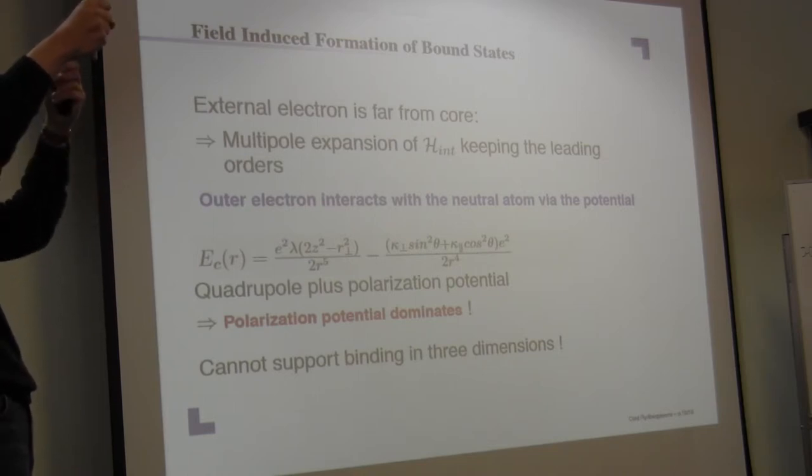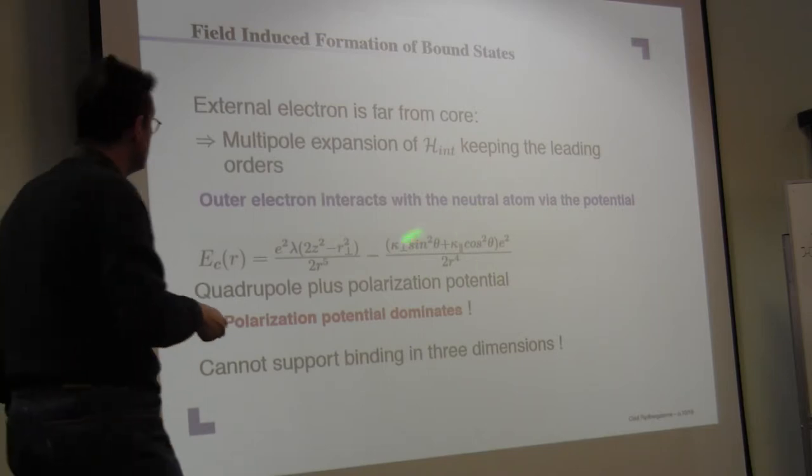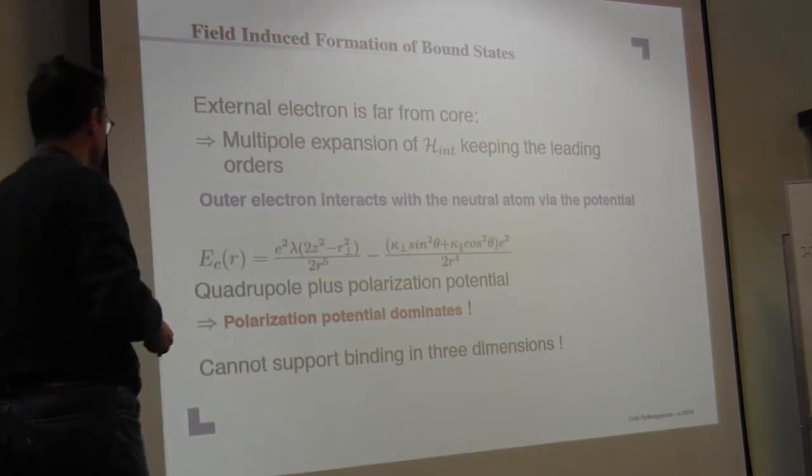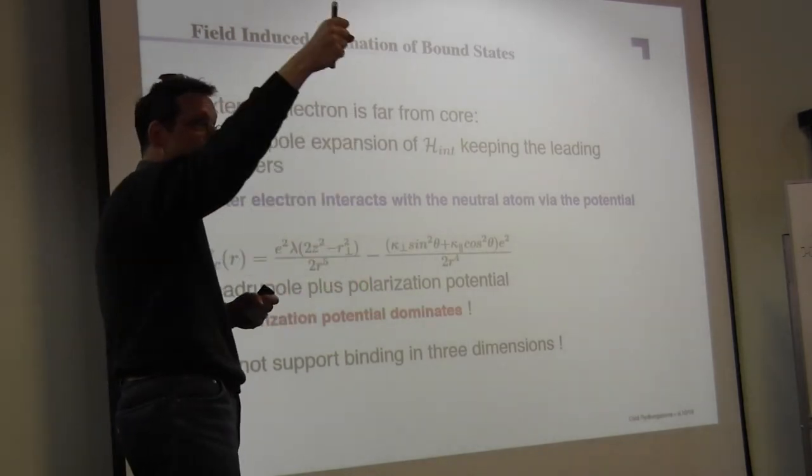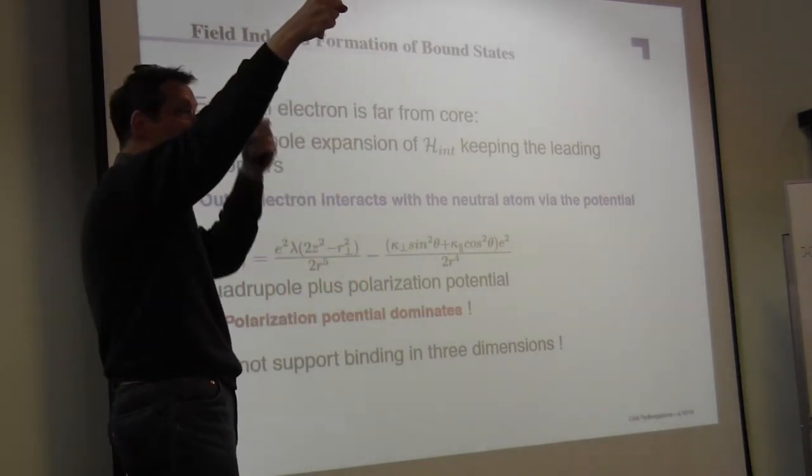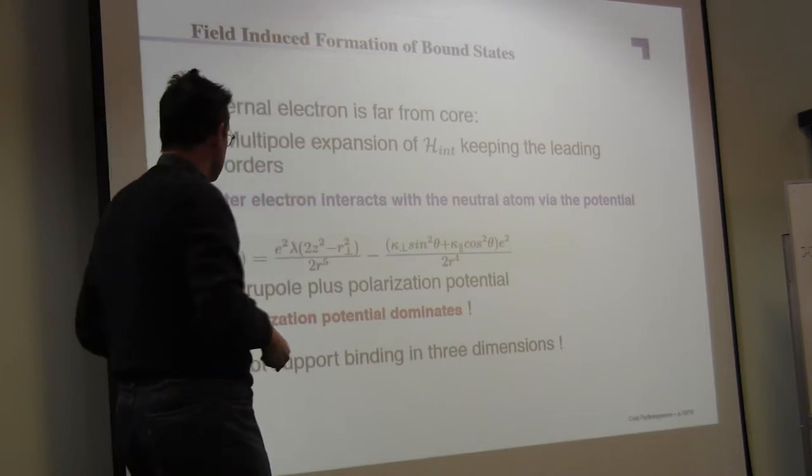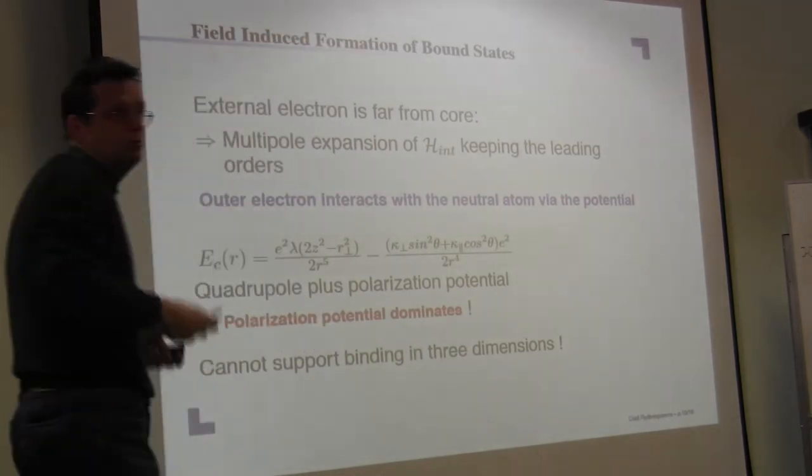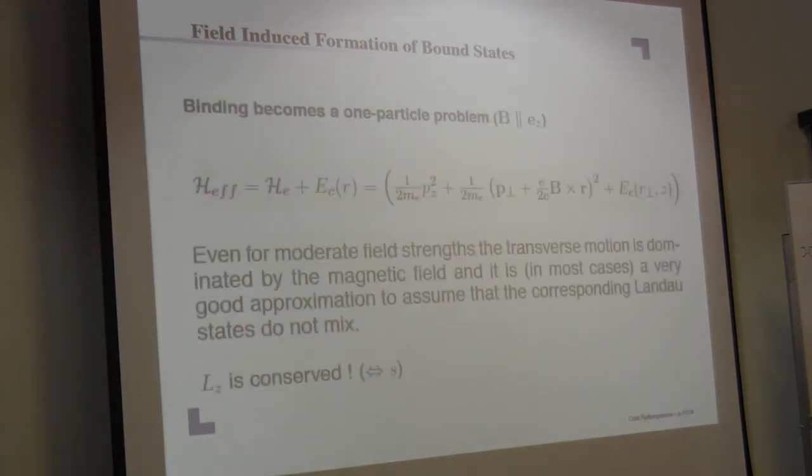Now, we know if you take the polarization potential and try to find bound states, there is none. If you analyze this, there is no bound states of the electron far apart in the asymptotics to this neutral core. So this is true in three dimensions, because it's a three-dimensional problem. But this is the point where now the magnetic field comes into play.